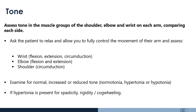Examine for normal, increased, or reduced tone — normotonia, hypertonia, or hypotonia. If hypertonia is present, determine whether there is evidence of spasticity, rigidity, or cogwheeling.